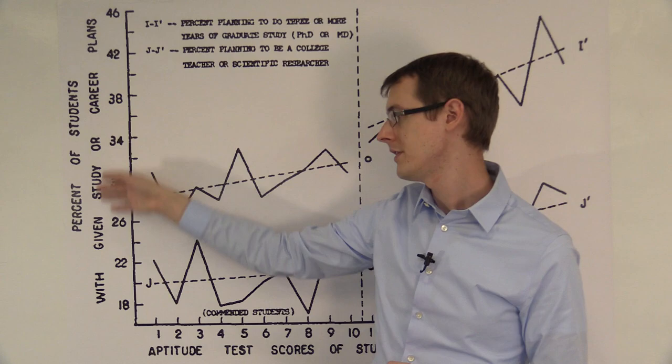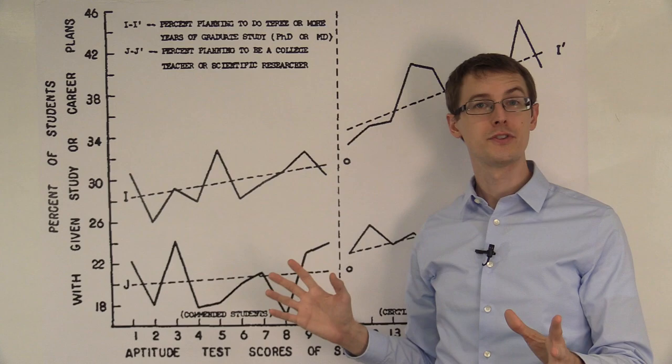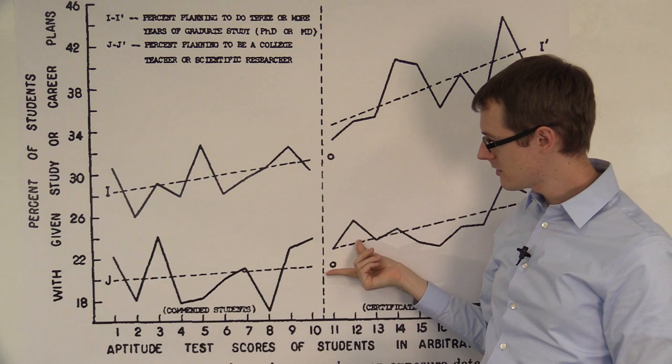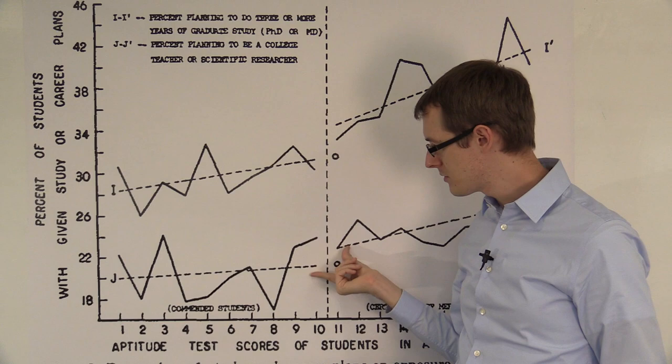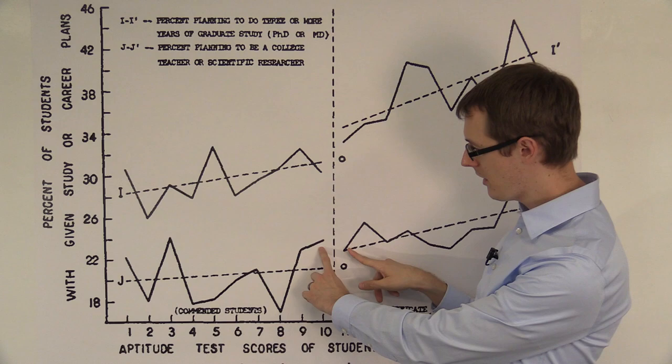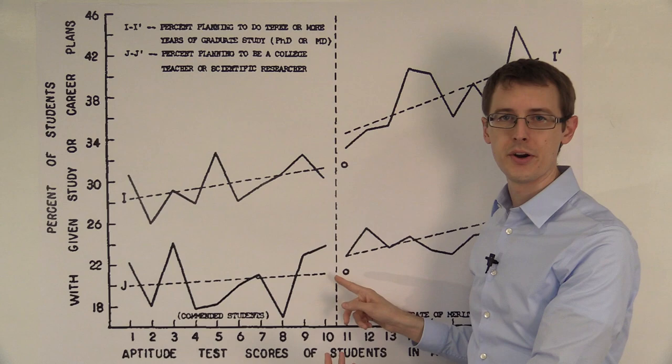So let's just look at the results first. For whether you're planning on becoming a college teacher or a scientific researcher, there's basically no difference in outcomes across the cutoff. You see that if you look at the regression lines, it's very close, and if you look at just the averages for 10 versus the average for 11, it's also very close. So if anything, there's about a 1% treatment effect.